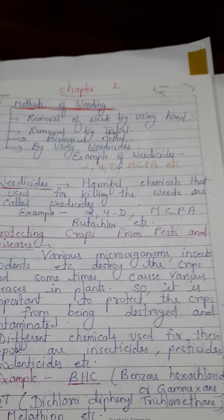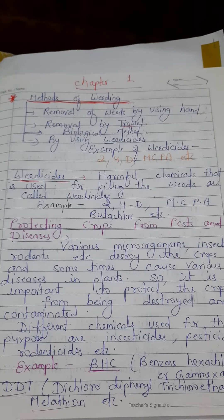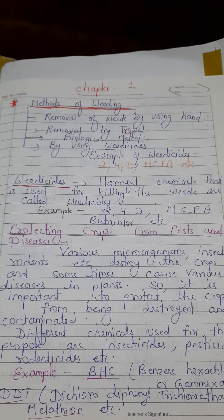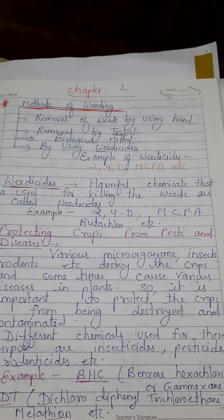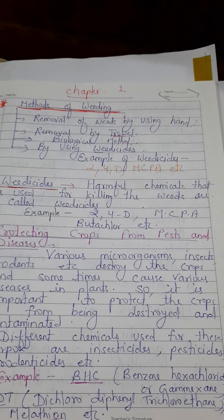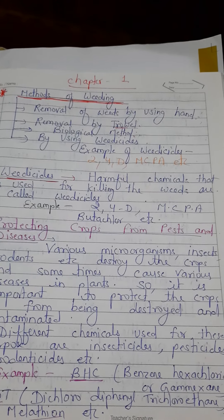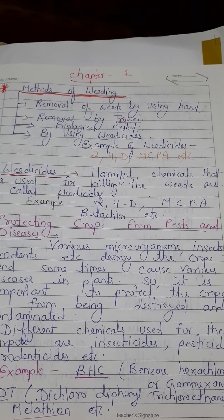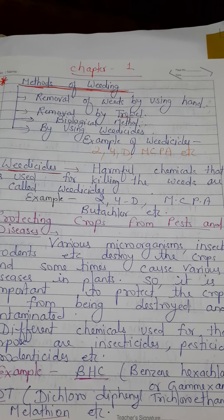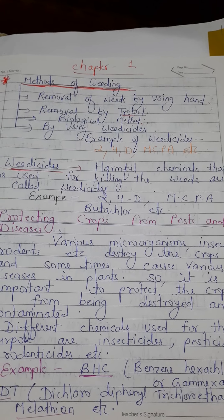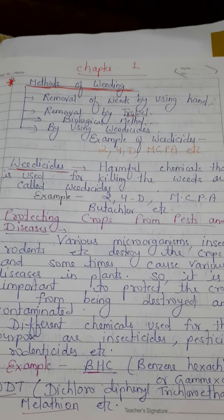Next is protecting crops from pests and diseases. Pests are animals or insects which may harm the crop. It is necessary to remove pests by using different chemicals, and those chemicals are called pesticides. Pesticides are of various types: insecticides, fungicides, and rodenticides — these are different examples of pesticides.